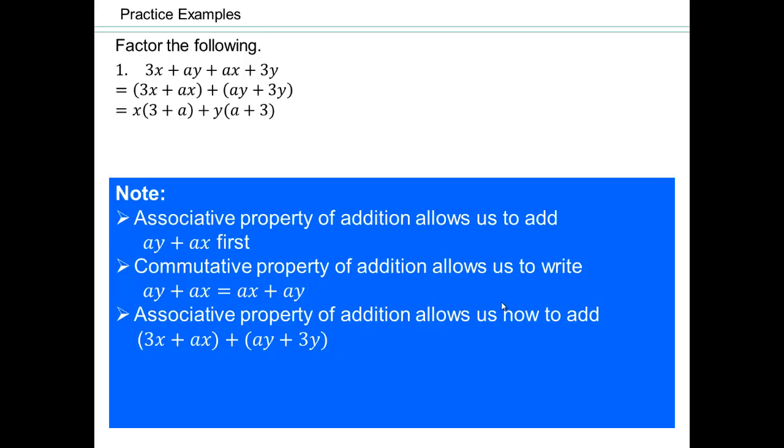So in order to add 3x plus ax, we can use like units. The like unit is the x, and you have 3 plus a of them. Or you can think of it as x is the greatest common factor, which I am pulling out. And then I have to write down what's left over in the brackets here. So x times 3 is 3x, x times a is ax.